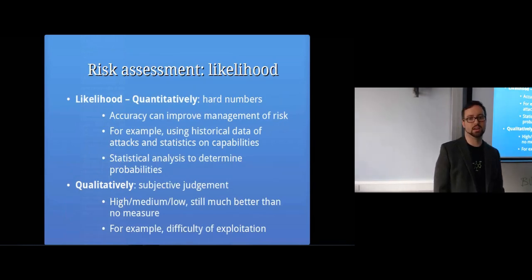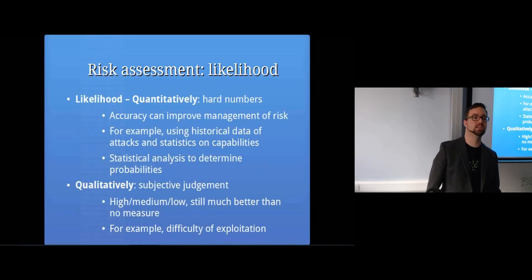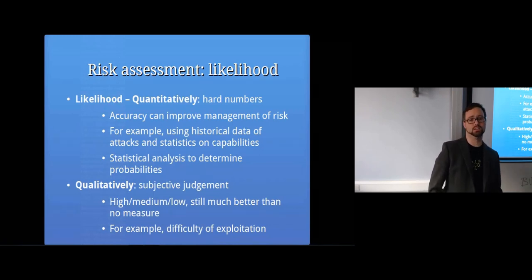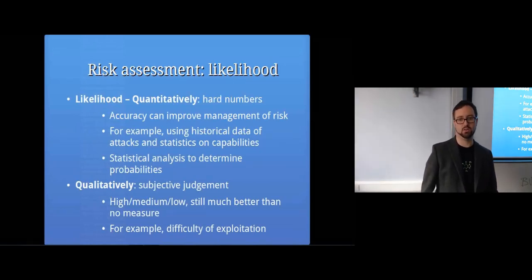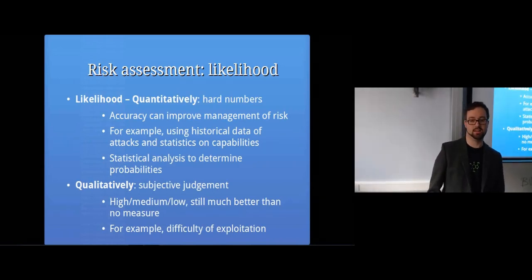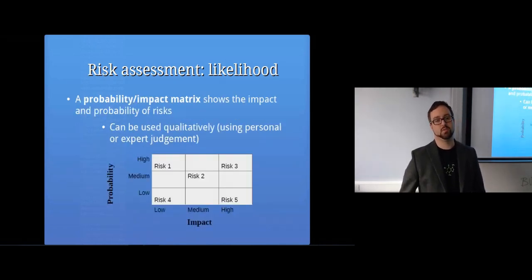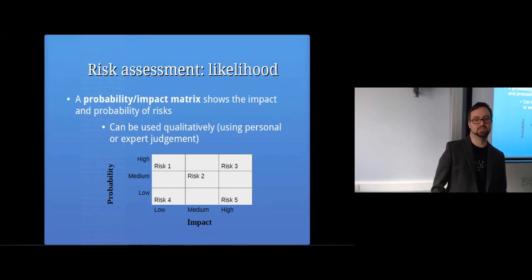So how do we determine the likelihood? You can look at quantitative stuff — use actual hard numbers. What has historically happened? What are the statistics of the capabilities of the attackers? Use statistical analysis to determine probabilities. That's the ideal world. Often you don't have those kinds of numbers, so you need to do qualitative analysis — where you use your own judgment, rating something as high, medium, or low likelihood. That's still a lot better than just not knowing at all. You can also use a probability-impact matrix to show impact and probability, either qualitatively or quantitatively.